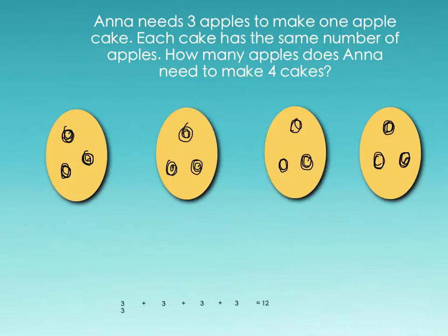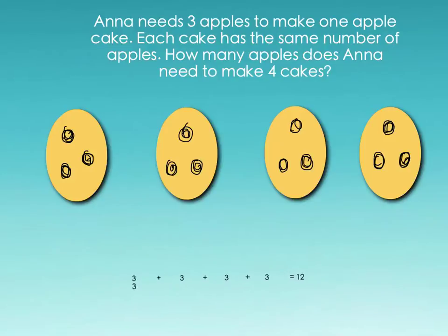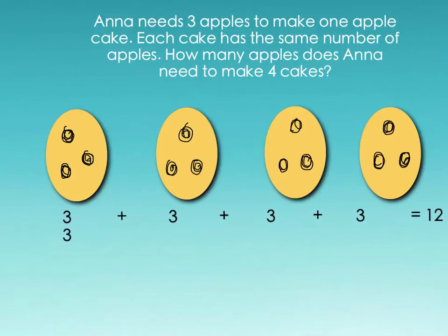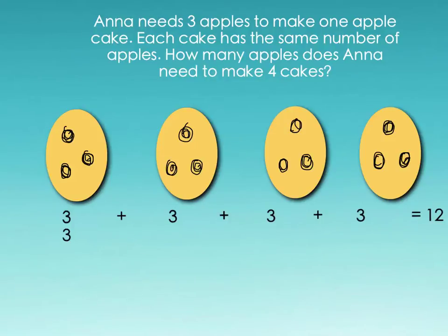I need to make sure all my cakes have the same number of apples. Once I've drawn my apples, I can figure out how many apples it takes to make four cakes by combining all four cakes together. I'm going to do what's called repeated addition. Notice that I'm taking the three apples from each cake — three plus three plus three plus three — and that gives me 12 apples. This is repeated addition; that's one way we can use to solve this type of problem.